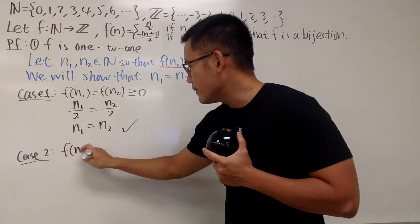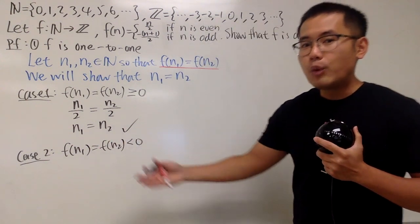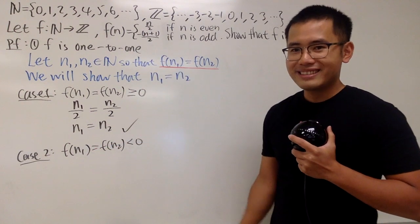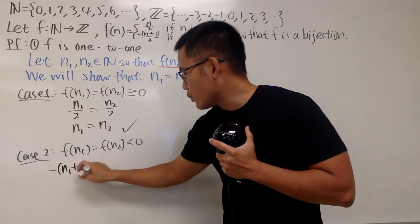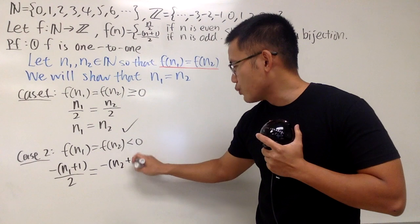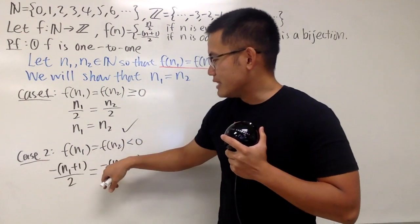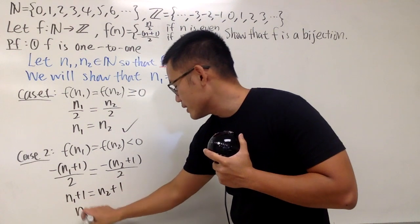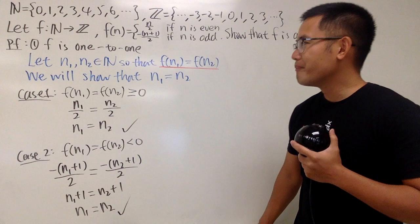So we're going to say f(n1) is the same as f(n2), both of them being negative. And when both of them are being negative, we put down n1 and n2 into here. So we have negative n1 plus 1 divided by 2. This is equal to negative n2 plus 1 divided by 2. And we can multiply both sides by negative 2. So we get n1 plus 1 is equal to n2 plus 1. And n1 is equal to n2 again.